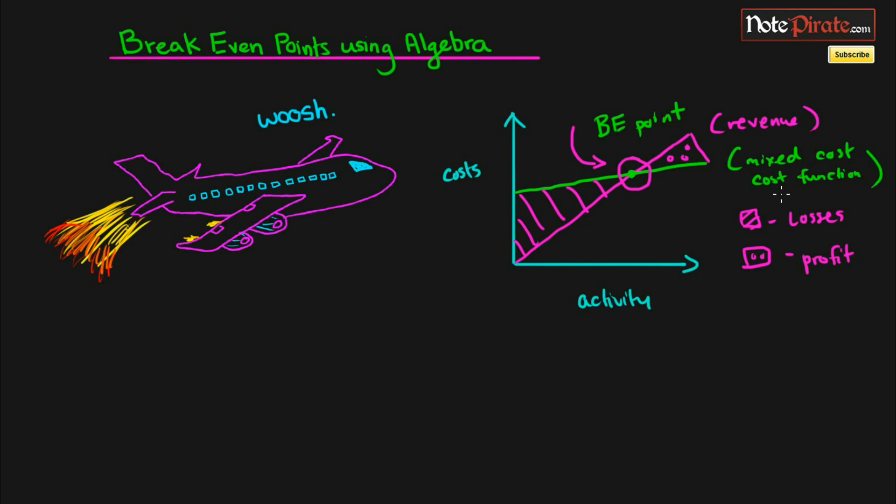This break-even point is actually just the intersection point of our revenue line and our mixed cost function line. Our mixed cost function is just the same as variable cost plus fixed cost, because a mixed cost function is just those two different costs.